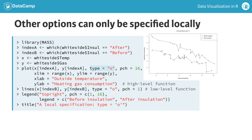Another important aspect of base R graphics is the distinction between high-level graphics functions like plot that generate an initial plot, and low-level graphics functions like points, lines, or text that add details to an existing plot. All of these functions support both local and global optional parameters that can be used to help us make plots look the way we want them to look.